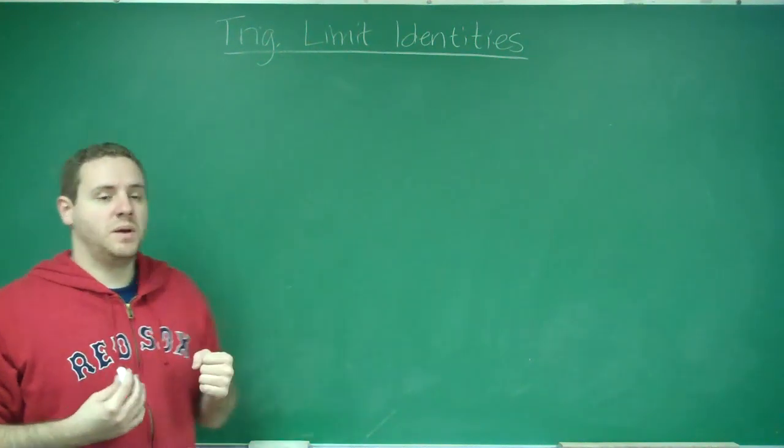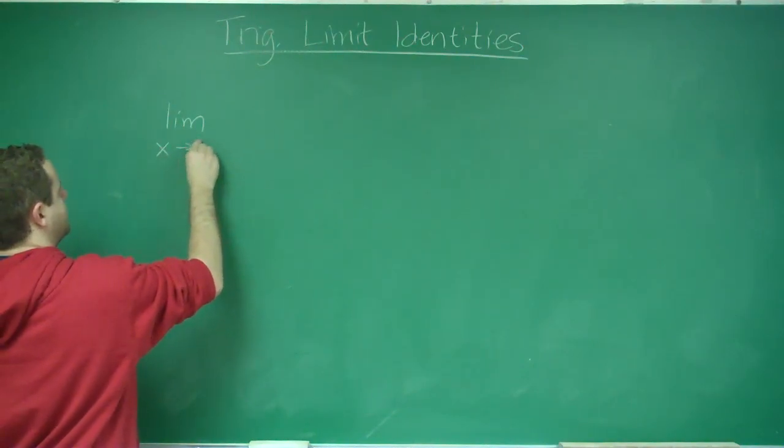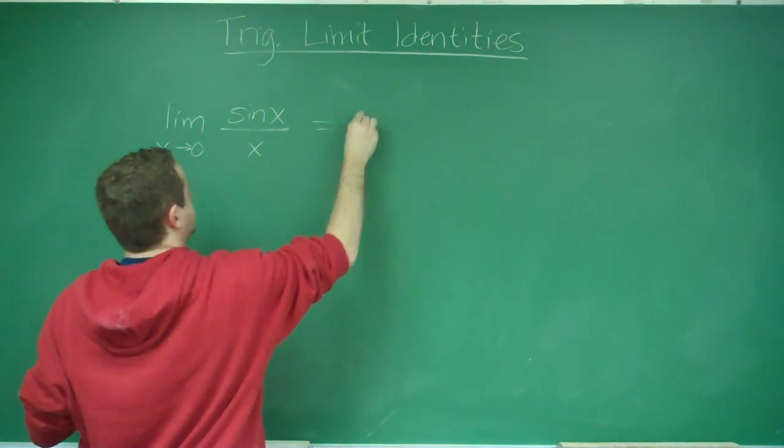So, the two main ones that you need to memorize are that the limit as x approaches 0 of sine x over x is equal to 1.